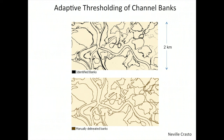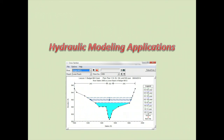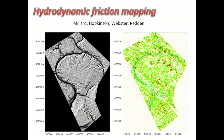Another parameter we need to attribute each cross section with is roughness. As mentioned, we can either map obstruction features in the landscape to get a quasi-physical estimate of roughness, or we can use a classification-based lookup table approach — where a given land cover type is assigned a Manning's n value from the lookup table. We get that land cover information from the classification derived from LiDAR and/or optical data.